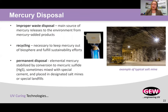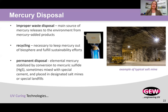Mercury can be disposed of in a couple of different ways. First, there's always improper waste disposal — mercury-added products should not be thrown into general trash collection. They need to be separated and recycled, which keeps mercury out of the biosphere and keeps us accountable to sustainability efforts. When there's no longer a use for a portion of mercury being stored, it can be permanently disposed: we take elemental mercury and react it with sulfide to form mercuric sulfide, also known as cinnabar. The cinnabar is then reacted with a special cement and placed in designated salt mines or special landfills — essentially turning mercury back into cinnabar and placing it deep within the earth, far removed from human and animal contact.